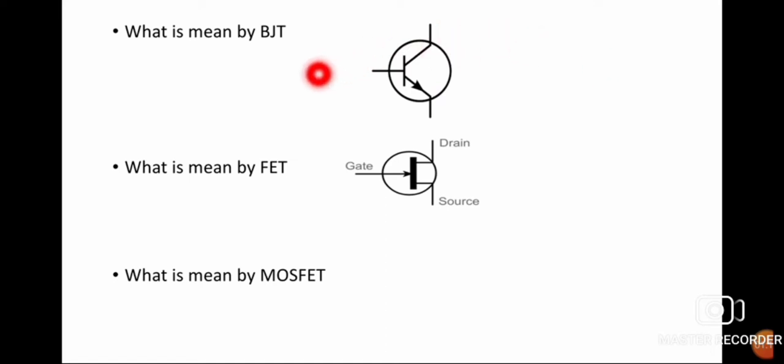Why do we call it a bipolar junction transistor? In BJT, the current flows due to both charge particles, that is electrons as well as holes. Hence, it is known as bipolar. As this transistor has two junctions, it is known as bipolar junction transistor.